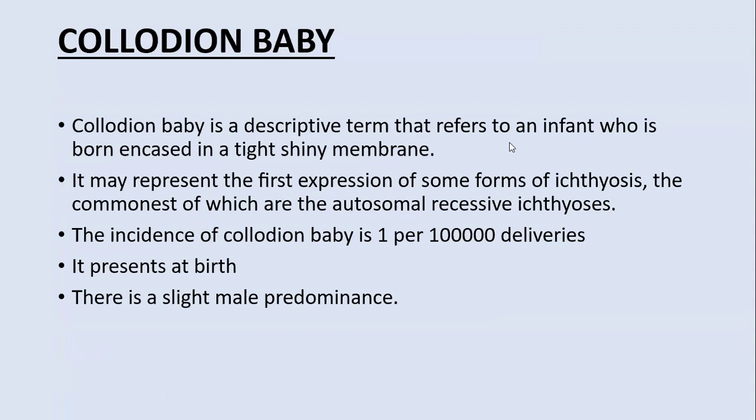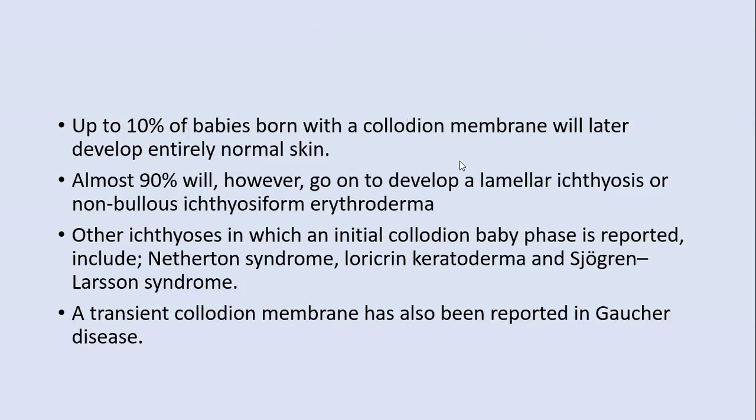Collodion baby is a descriptive term referring to an infant born encased in a tight, shiny, plastic-like membrane. It may represent the first expression of some congenital forms of ichthyosis, the commonest being autosomal recessive ichthyosis. The incidence is one per 100,000 deliveries; it is present at birth with a slight male predominance. Up to 10% of babies born with a collodion membrane will later develop entirely normal skin.